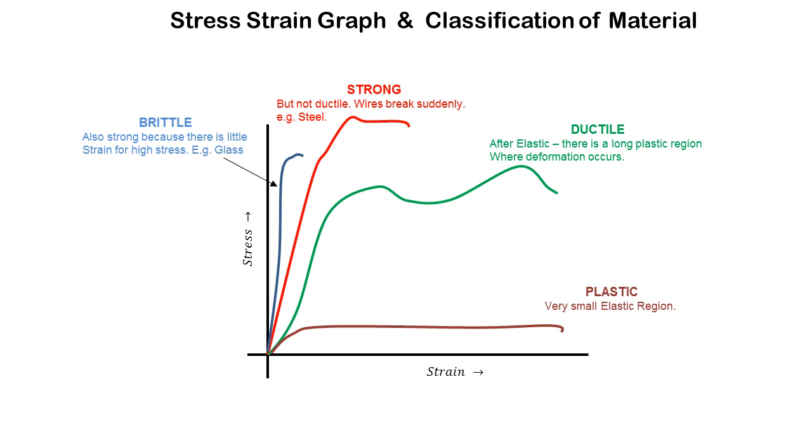These are stress-strain graphs for some materials. Glass is brittle and it is strong. It can take a lot of stress without deformation.